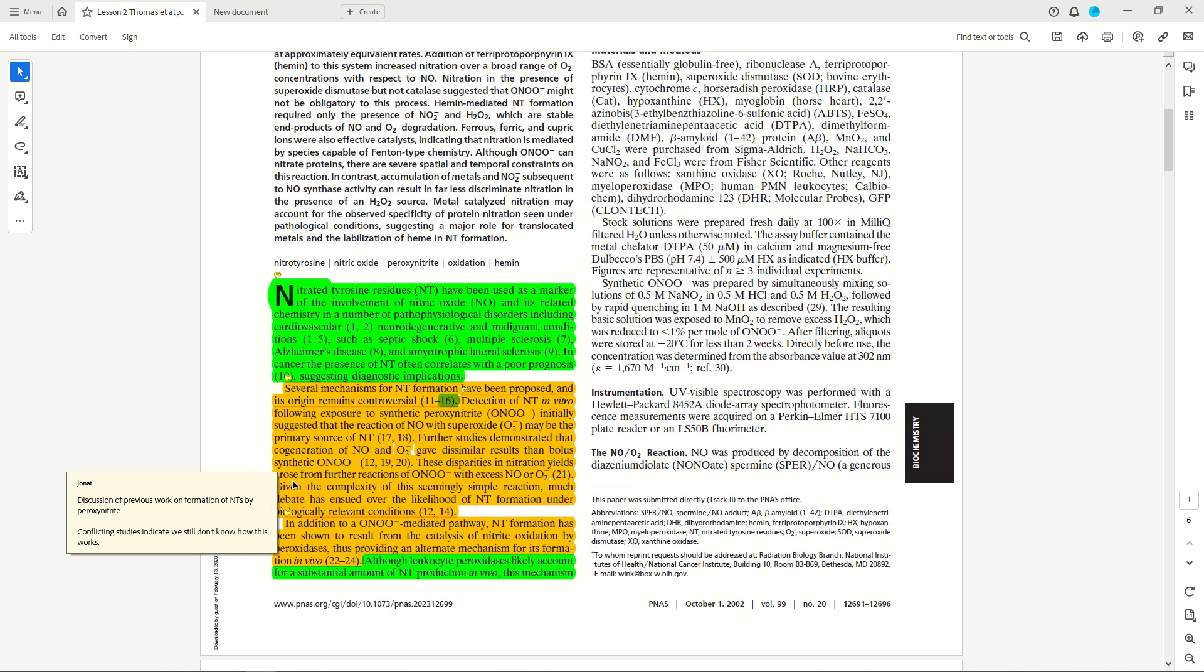And then again, it alludes to this conflict. At the beginning of the next paragraph, it starts to discuss an alternate mechanism of how nitrated tyrosines might be formed, which says in addition to a peroxynitrite-mediated pathway, NT formation has been shown to result from the catalysis of nitrite oxidation by peroxidases, which are a metal enzyme, thus providing alternate mechanism for its formation in vivo. So we started by the authors saying that there's controversy, and it's immediately showing what this controversy is by showing one proposed pathway for nitrated tyrosine formation, and then immediately introducing the second pathway.